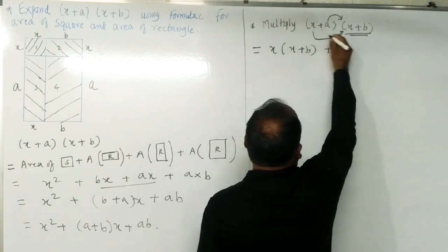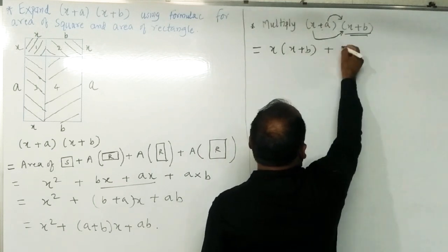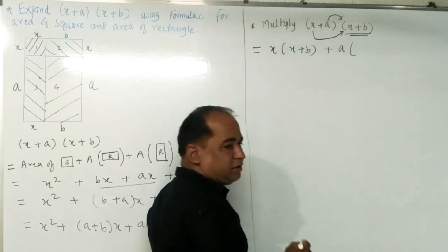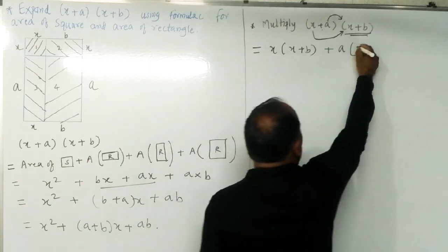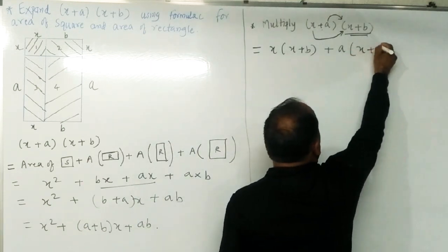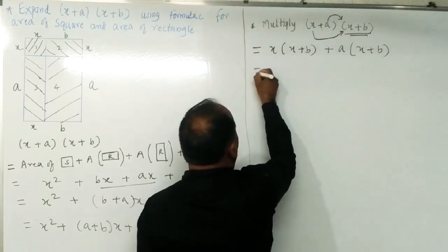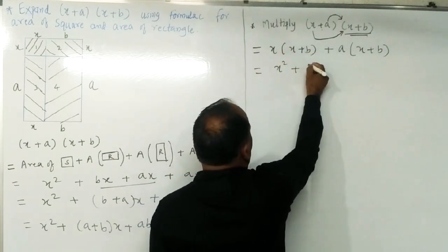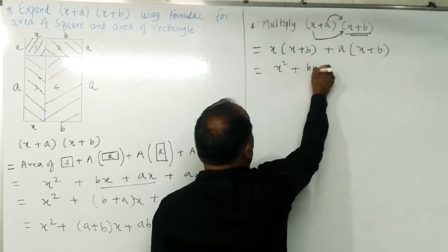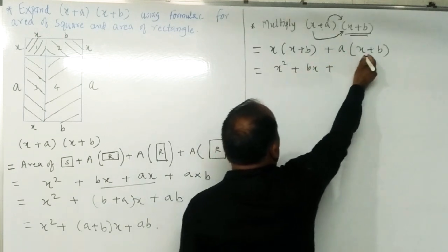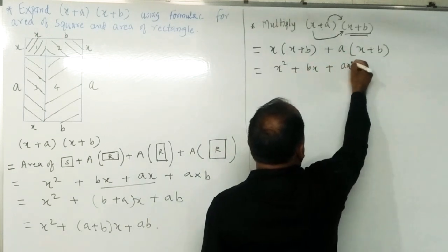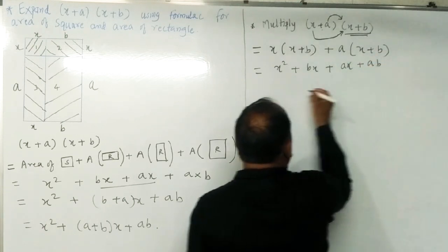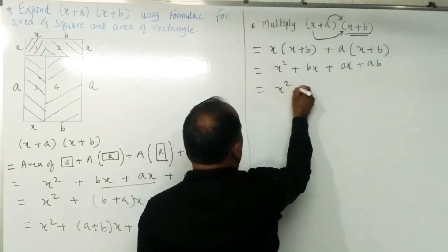Plus the second term a of the first bracket into (x + b). That gives us x into x which is x squared, plus x into b which is bx, plus a into x which is ax, plus a into b.